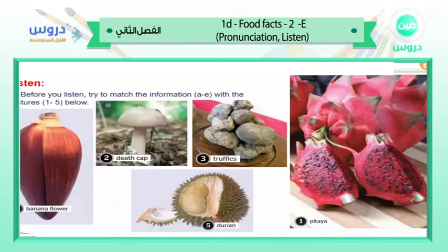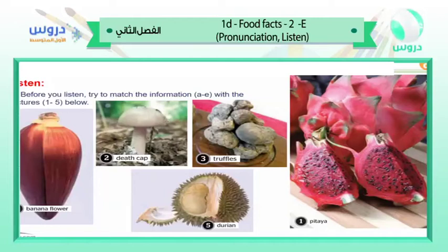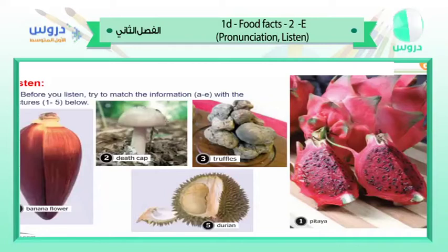'On to the next picture.' 'It's a mushroom.' 'Yes, but what kind of mushroom?' 'No — it's called a death cap and it can be very dangerous, so you can't eat it.' 'Oh no, definitely not.' 'Next picture, now Pam.' 'Are they some kind of strawberry?' 'No, they are a fruit though — they are called pitayas or dragon fruit and you can find them in central and south America.'